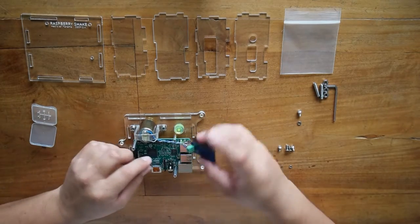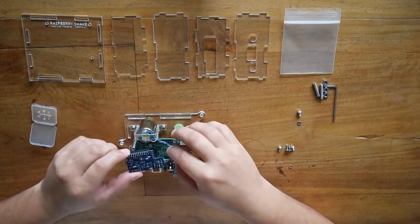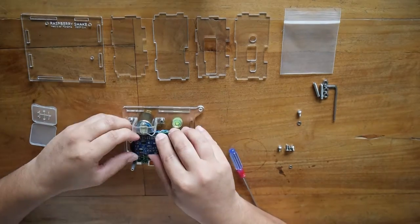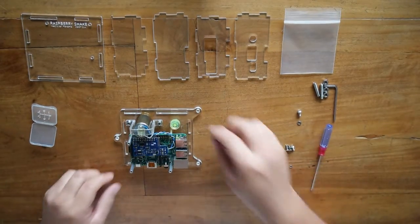Hold carefully your Raspberry Shake and plug it into the Pi header as you see in this video. Notice that the cut side of the Shake is beside the USB port of the Pi.